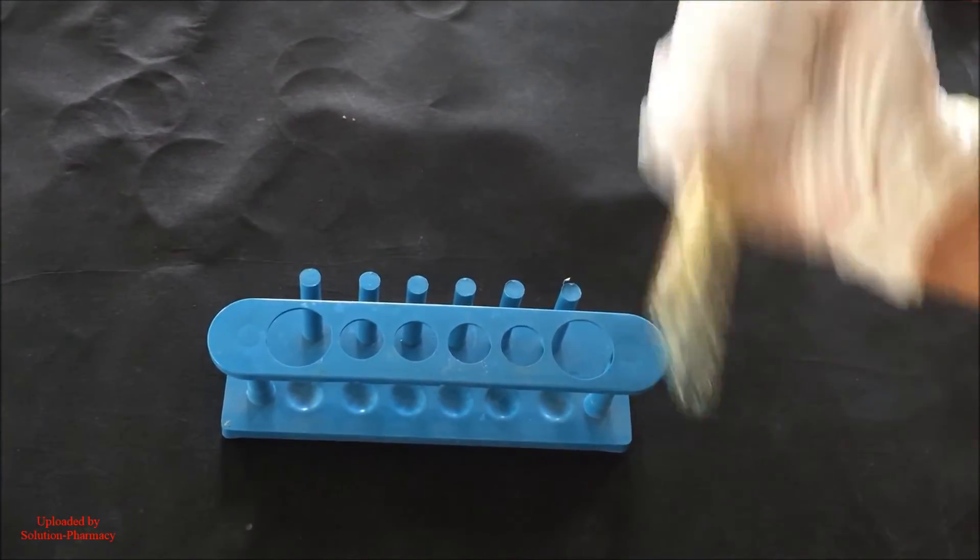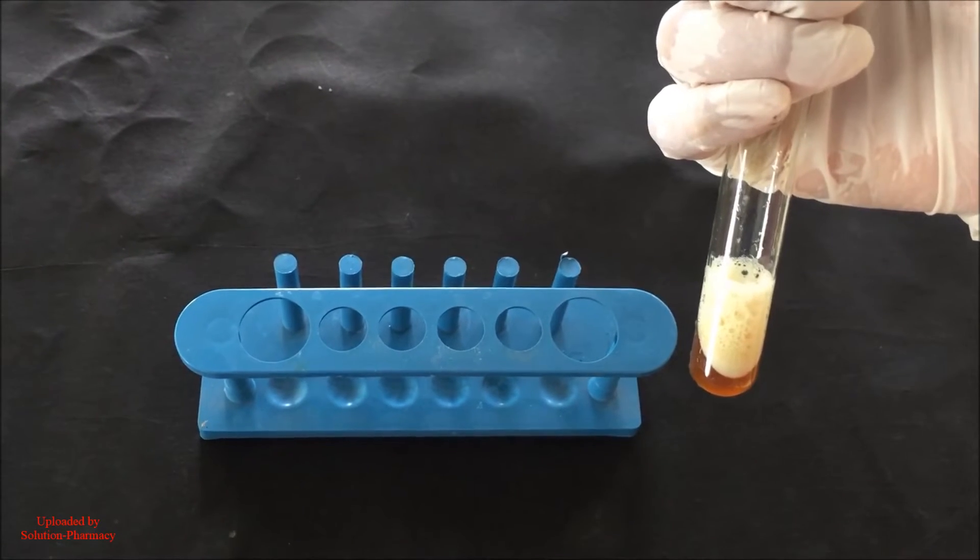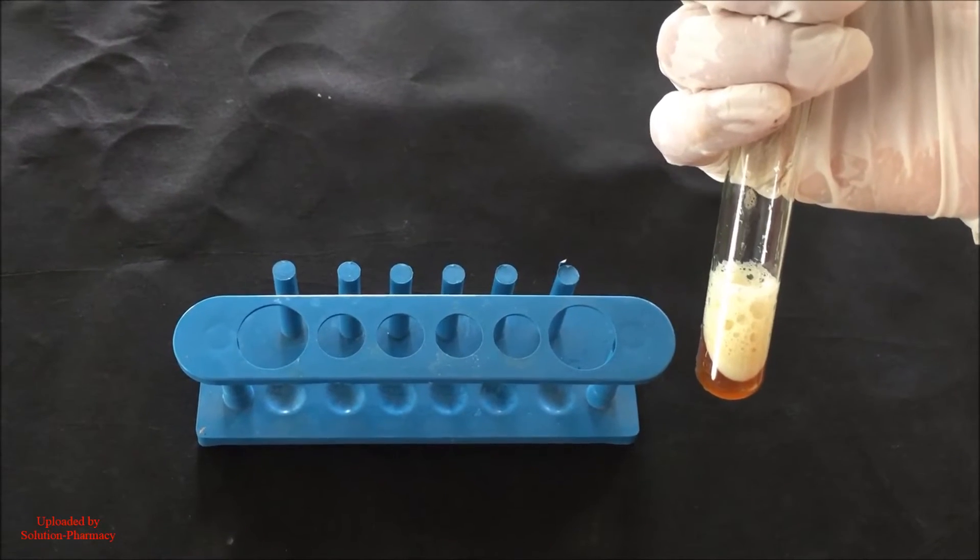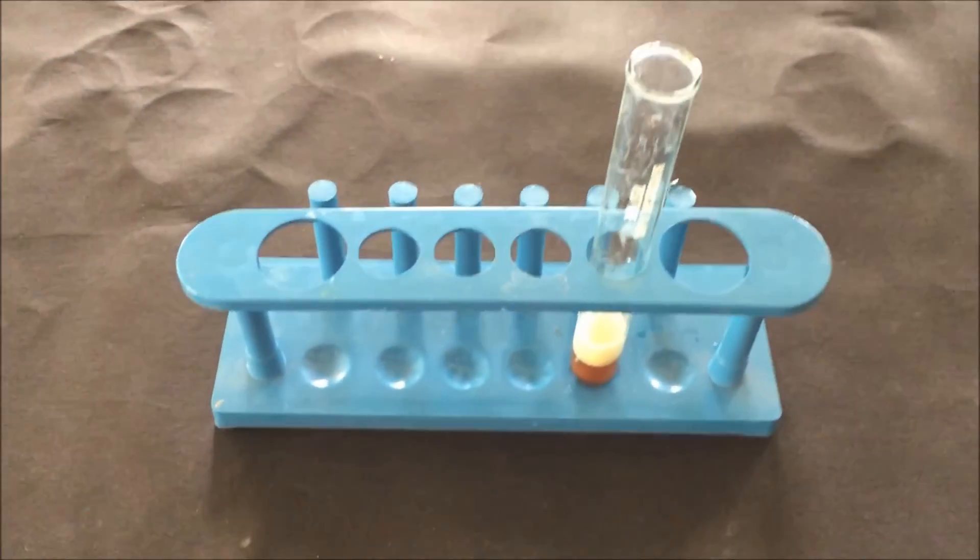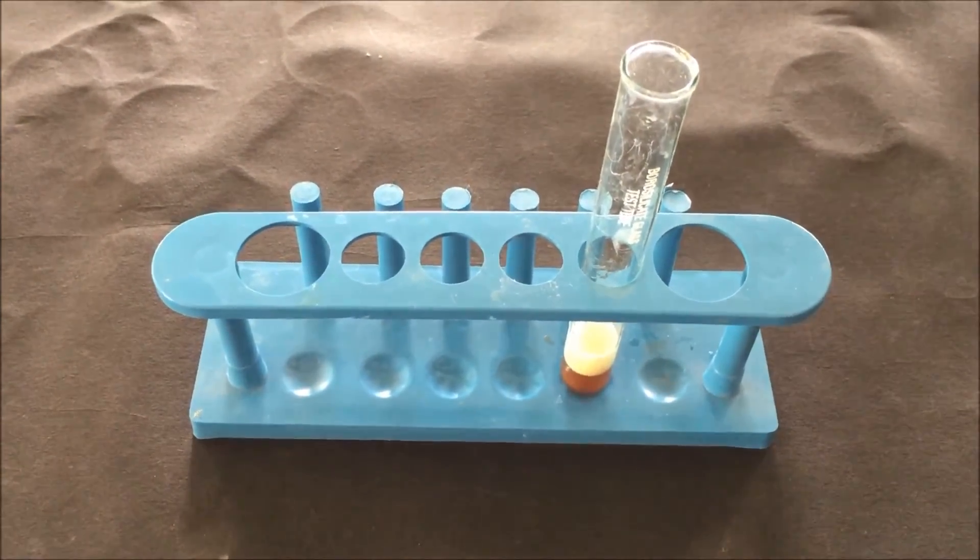Formation of foam indicates the presence of saponin in our extract. Then keep the test tube for 5 minutes in a test tube stand. If the foam is stable after 5 minutes, then it confirms the presence of saponin in our sample.